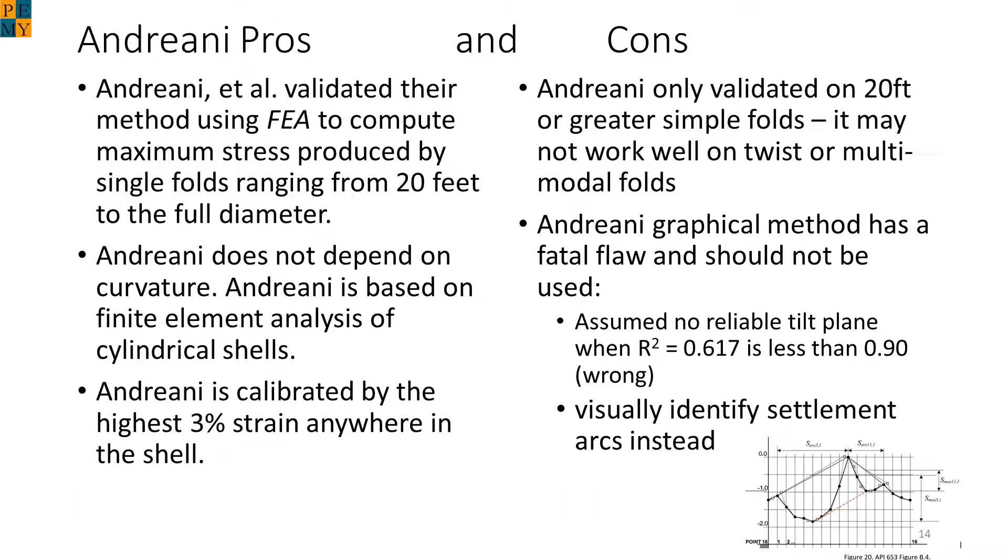There's another problem, which is the alternate graphical method, where the inset shows API 653 instructions for this. The method is an error because it assumed that only settlement with R-squared greater than 0.9 is valid. In this method, they did not subtract the tilt plane. It's also not repeatable, so this method is recommended not to be used.